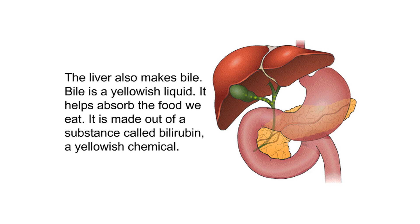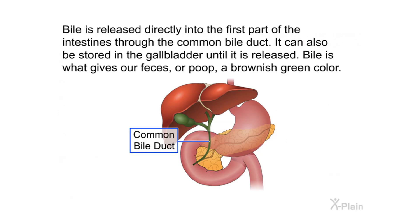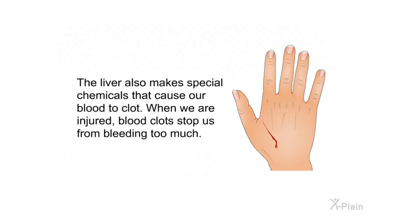The liver also makes bile, a yellowish liquid that helps absorb the food we eat. Bile is made out of a substance called bilirubin, a yellowish chemical. Bile is released directly into the first part of the intestines through the common bile duct, and can also be stored in the gallbladder. Bile is what gives our feces a brownish-green color. The liver also makes special chemicals that cause our blood to clot when we are injured, which stops us from bleeding too much.